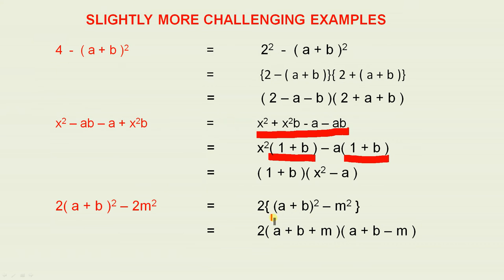What we have here, this is the same format as a² minus b². So it's 2(a + b + m)(a + b - m). So that's the answer.